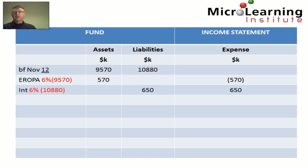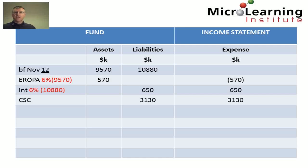The interest, which reflects the moving forward in time closer to the payment of the liabilities, is recognised at 6% with respect to the opening liabilities of $10.88 million. This interest expense increases the liabilities of the fund and is also recognised in the income statement. The current service cost — essentially the cost of the current service of the employees in relation to the increase in their pension liabilities — is recognised as an increase in the liabilities of the fund and also as an expense to the income statement.